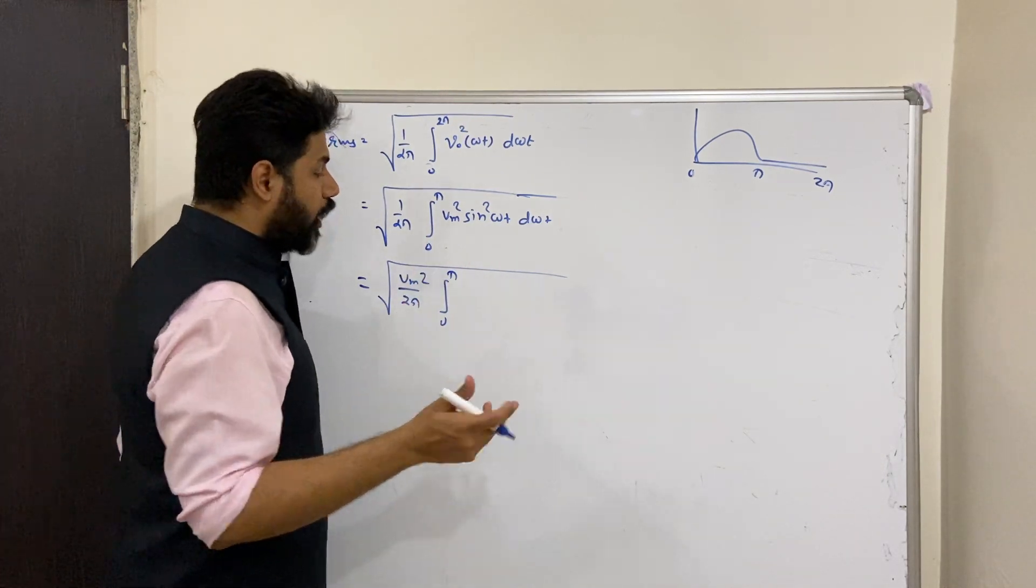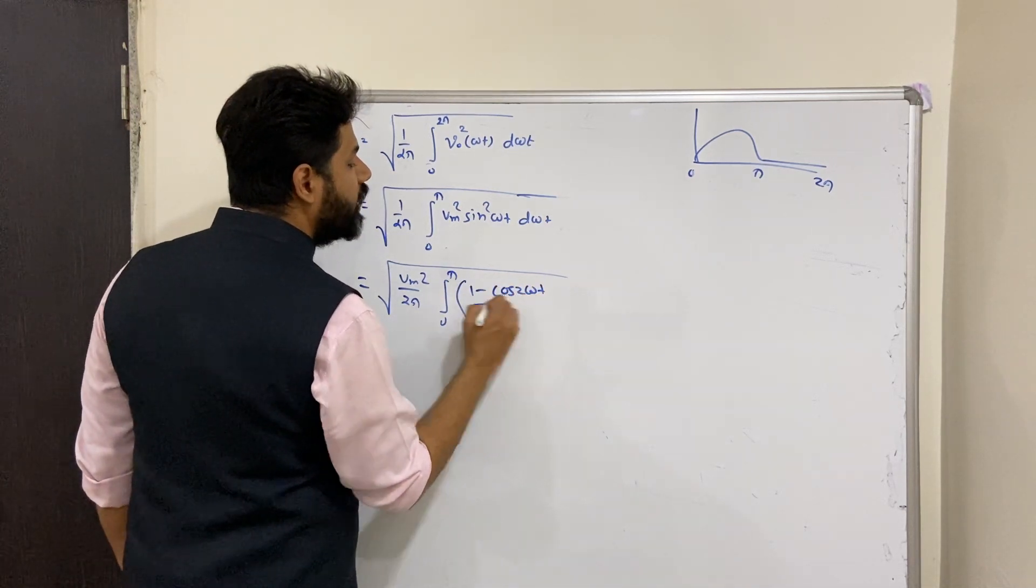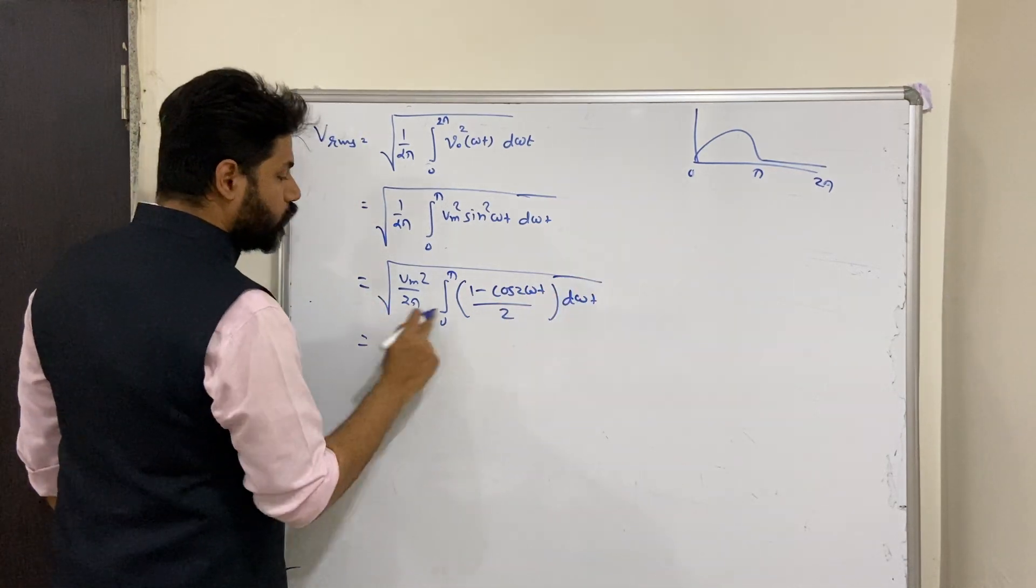Sine square, direct integration is not happening, so that is why we will be having 1 minus cos 2 omega t divided by 2 into d omega t. So now let us integrate it. 2 will come over here.